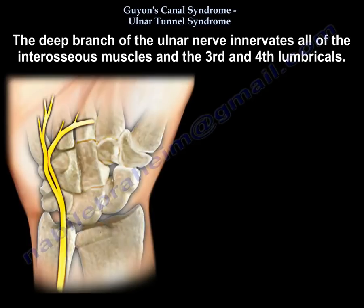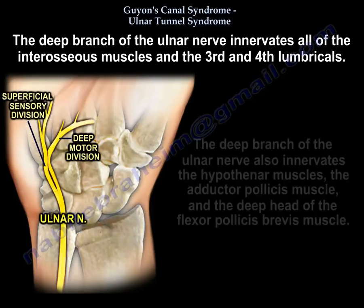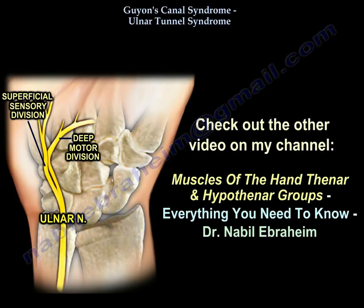The deep branch of the ulnar nerve innervates all of the interosseous muscles and the third and fourth lumbricals. It also innervates the hypothenar muscles, the adductor pollicis muscle, and the deep head of the flexor pollicis brevis muscle. A separate video about muscles of the hand — thenar and hypothenar groups — explains these muscles in detail.